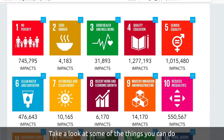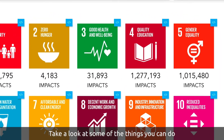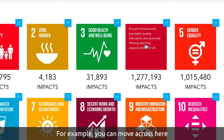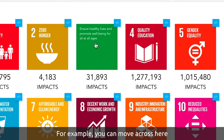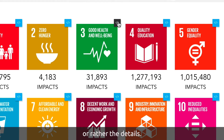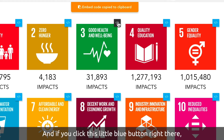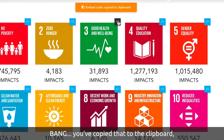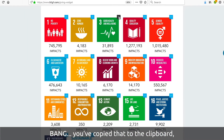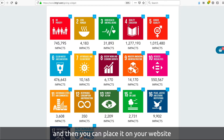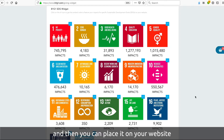Take a look at some of the things you can do to embed it on your website. For example, you can move across here and have a look at the titles of the SDGs — or rather the detail — and then if you click this little blue button right there, bang, you've copied that to the clipboard, and then you can paste it on your website in whatever way you like.